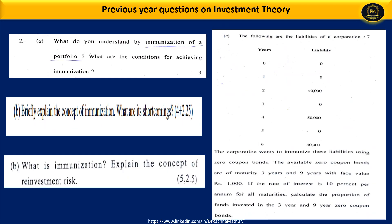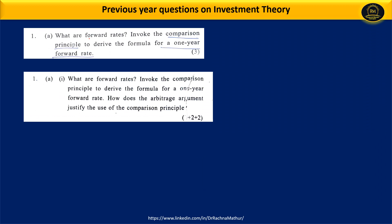Another important topic in Unit 1 is immunization. Various questions have appeared from immunization — what is immunization, explain the concept of reinvestment risk — as well as numerical questions on it, so prepare immunization very well. The question on forward rate appears in this section but is marked with asterisks, clearly indicating it will not be used in the evaluation.